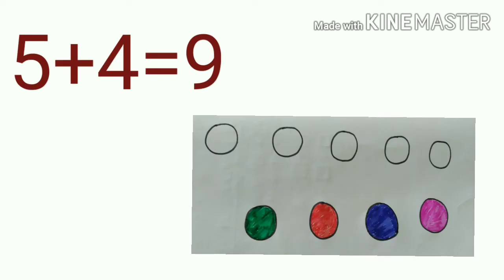Children, how many circles are shaded here? Yes, 4 circles are shaded and 5 circles are unshaded. So we can add 5 plus 4 is equal to 9.